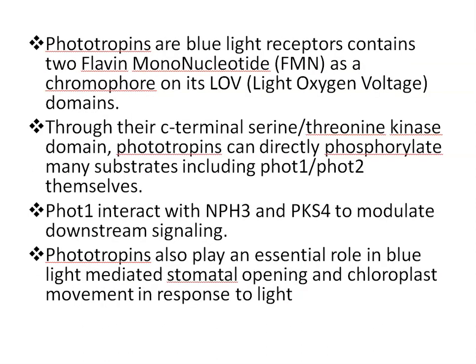Phototropins are blue light receptors. They contain FMN (flavin mononucleotide) as a chromophore on their LOV domains. Through their C-terminal serine kinase domain, phototropins can directly phosphorylate many substrates, including phototropin 1 and 2 themselves. Phototropin 1 interacts with NPH3 and PKS4 to modulate downstream signaling. Phototropins also play an essential role in blue light-mediated stomatal opening and chloroplast movement in response to light. This is all about the general structure and mechanism of photoreceptors in plants. Thank you.